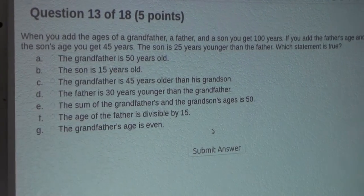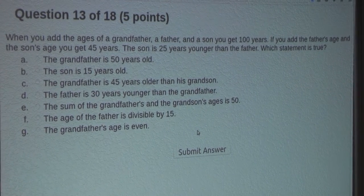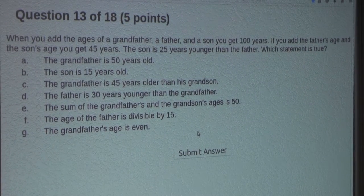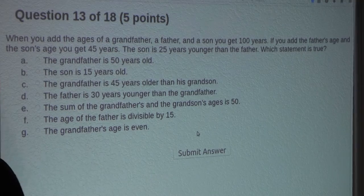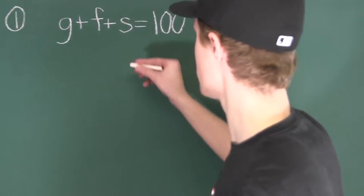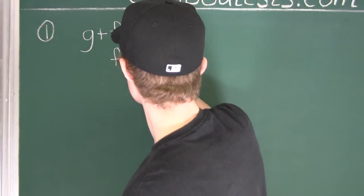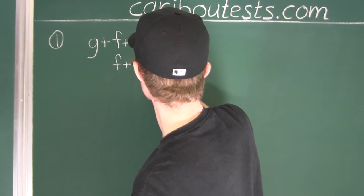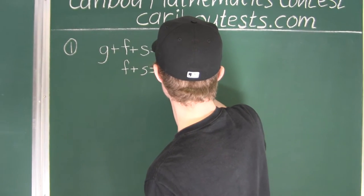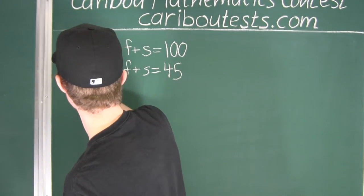The second statement: if you add the father's age and the son's age, you get 45 years. That is just F plus S is equal to 45. That is the second equation.